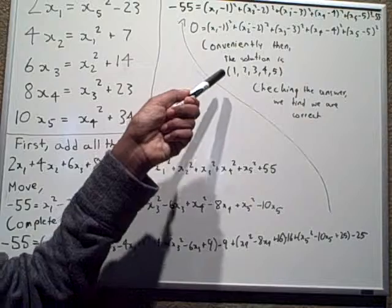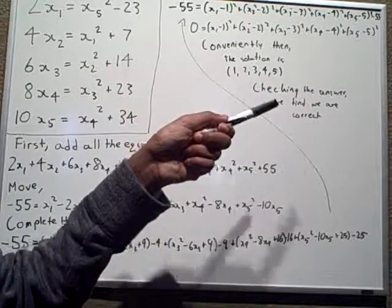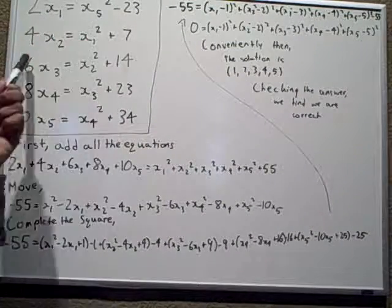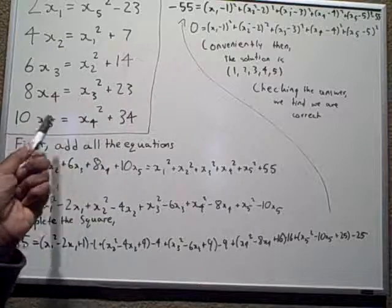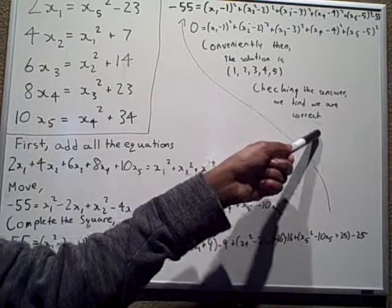So the solution is 1, 2, 3, 4, 5. We check the answer by inputting it into the original equations and see if they work, and we find that they are correct.